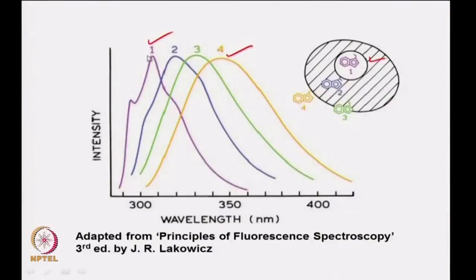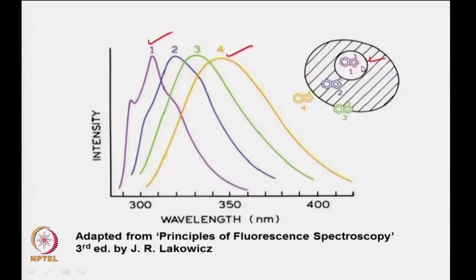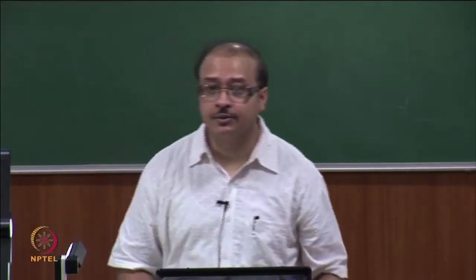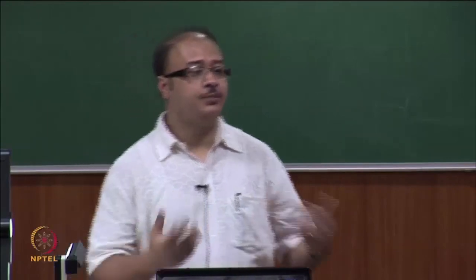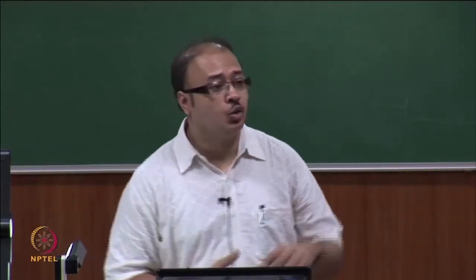That is exactly what we see. For position one — solely in the interior — you can see how blue shifted the emission is relative to the others. Then two is a little less on the interior side. For three, part faces the interior and part is exposed. Number four is fully exposed and you can see how the wavelength has shifted from one to four towards the red side. So if you take a protein and look at the tryptophan emission maximum, you get an idea of to what extent the tryptophan is buried or exposed.